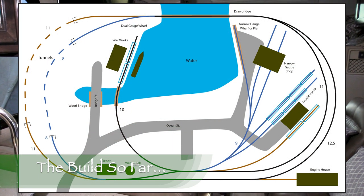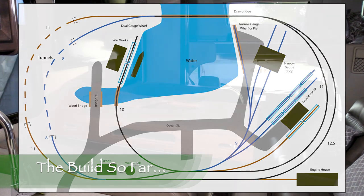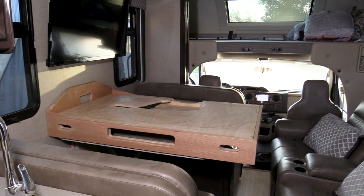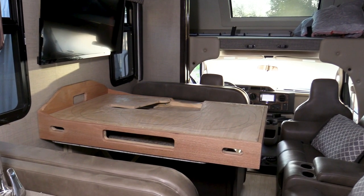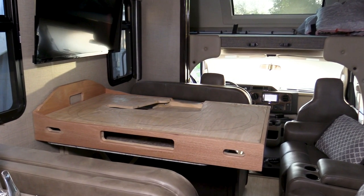Our N-Scale Siren Creek layout is designed to be small enough that Nicole and I can take it with us when we travel in our RV. It's also a way for me to do some model railroading while I'm waiting for the train room for my future HO scale layout to be completed.